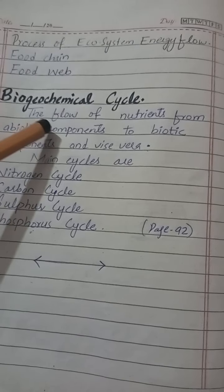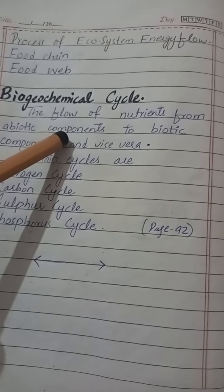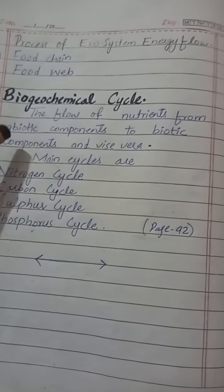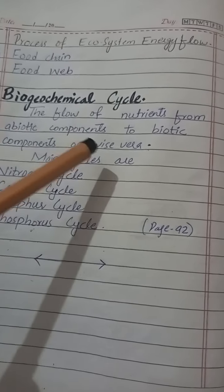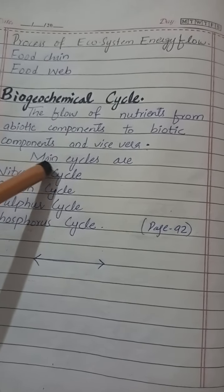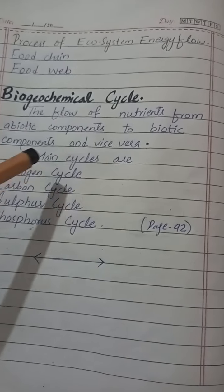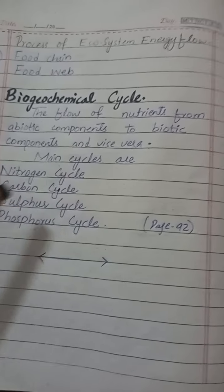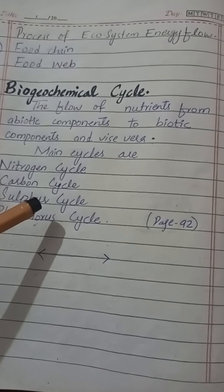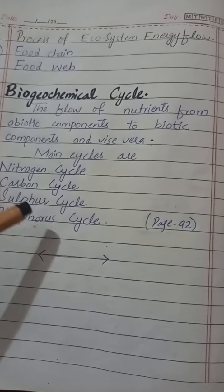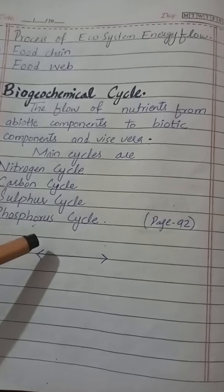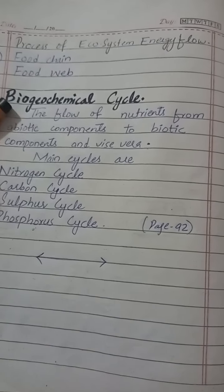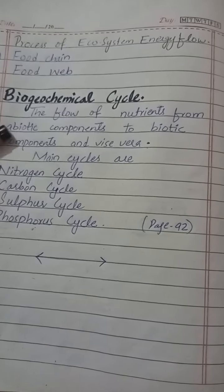Our last topic of this chapter is the biogeochemical cycle — the flow of nutrients from abiotic components to biotic components and vice versa. The main cycles are the nitrogen cycle, carbon cycle, sulfur cycle, and phosphorus cycle.